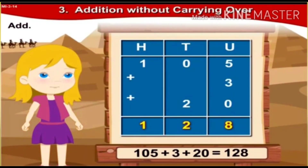Last sum: 105 plus 3 plus 20. 105 is 1 hundred, 0 tens, 5 units; plus 3 units; plus 20 is 2 tens, 0 units. Units column: 5 plus 3 is 8, plus 0 is 8 units. Tens column: 0 tens plus 2 tens is 2 tens. Hundreds column: only 1, write 1. The answer is 1 hundred, 2 tens, 8 units — that is 128.